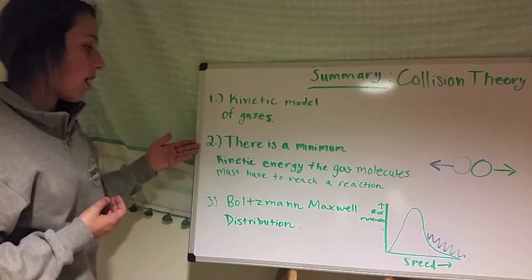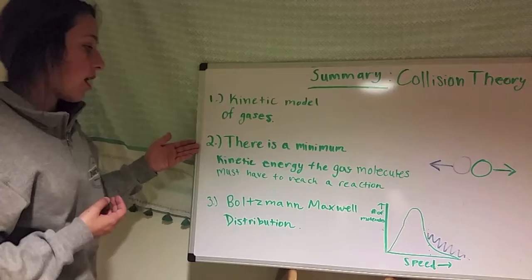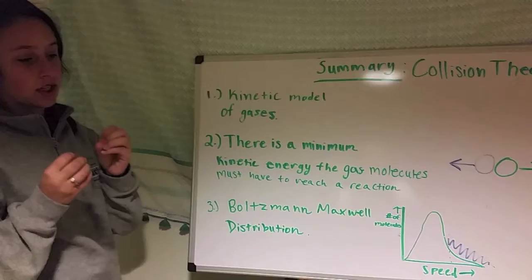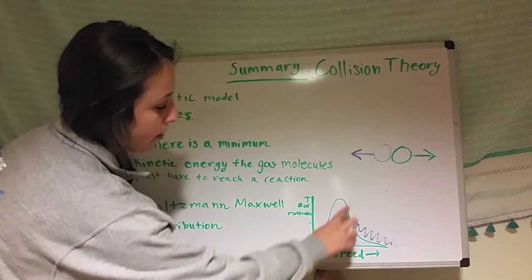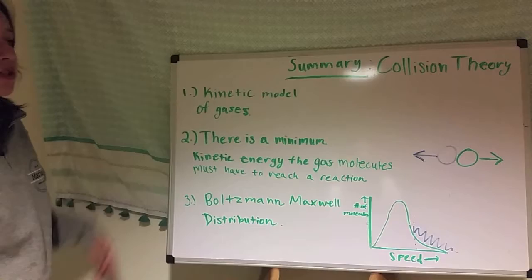Then we talked about how there is a minimum kinetic energy that the gas molecules must have in order to have a reaction. If they don't have that minimum energy, they're just going to repel and bounce off of each other. And lastly, we talked about the Maxwell-Boltzmann distribution, about how at different temperatures we're going to have different speeds of the molecules and then have more collisions occurring.